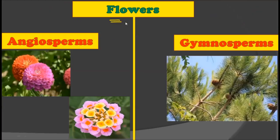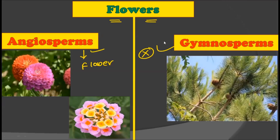The second point we are considering is flowers. Angiosperms are the only group that contains flowers, while gymnosperms are without flowers — gymnosperms do not produce any kind of flower and directly bear seeds. Angiosperms contain many colorful flowers, while gymnosperms do not contain any type of flower.